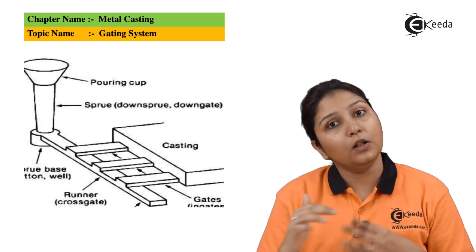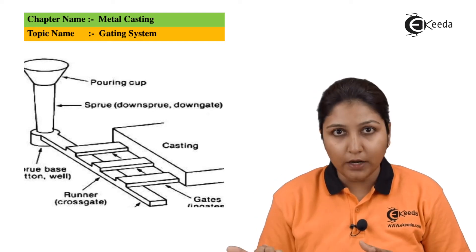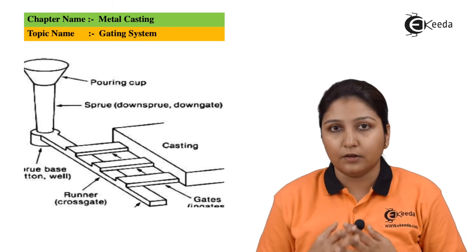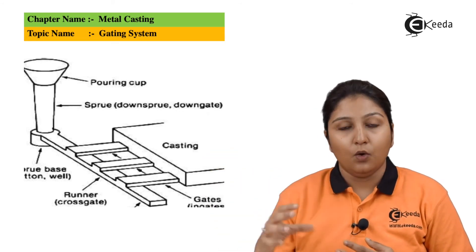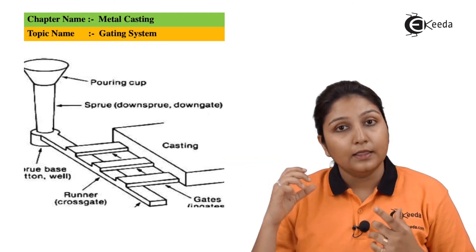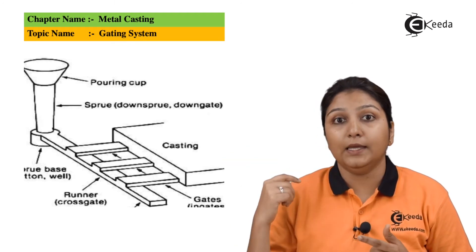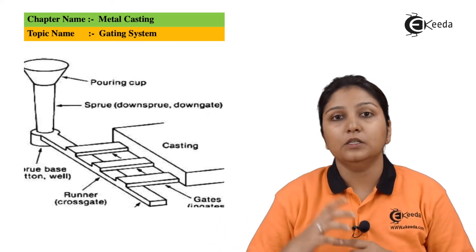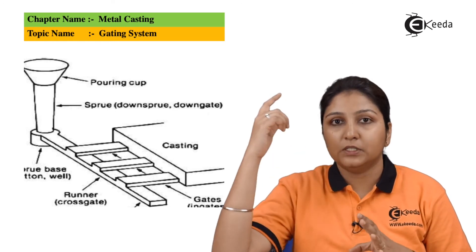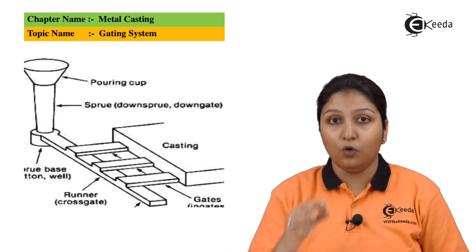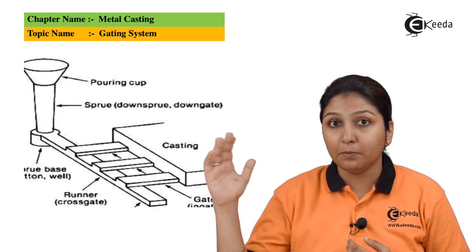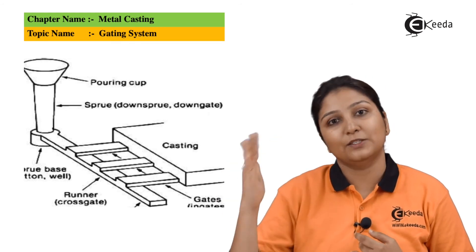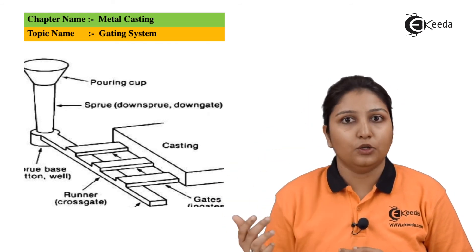All the molten metal is then collected in the sprue well. From there, it passes through the runners — whatever shape the material is, it flows through the runner. Then there are small ingates which help the material to directly enter the cavity. So the whole path goes from the pouring basin through the sprue, sprue well, runner, and finally through the gate into the cavity.